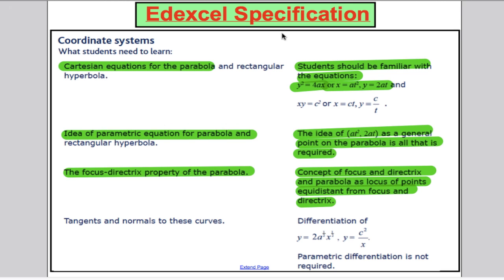Now, we have done everything we needed on parabolas. The only thing I've left out is that we need to know the Cartesian equation for a rectangular hyperbola, and it is xy = c², and we need to know the parametric, which is x = ct and y = c/t, and that's what it says here, the idea of a parametric equation of a hyperbola there.